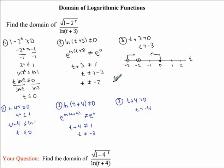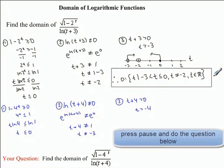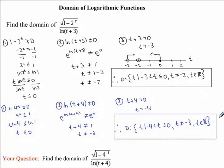So our overall domain will be written as: the set of t such that negative 3 is less than t, which is less than or equal to 0. And we also need to include that t cannot equal negative 2, and that t belongs to all reals. So this here is our final answer. I would now like you to find the overall domain for the question you were given. This is how your final answer should look like.